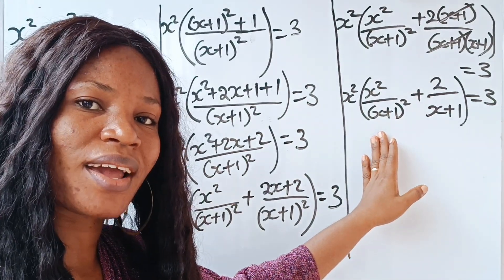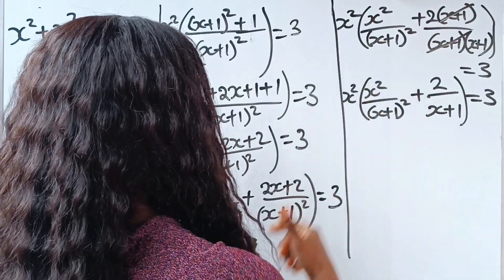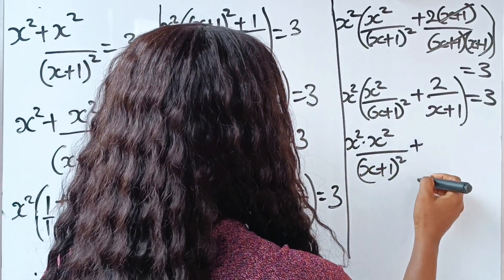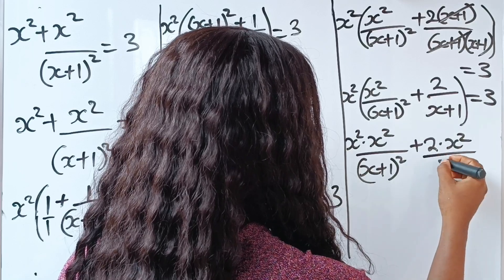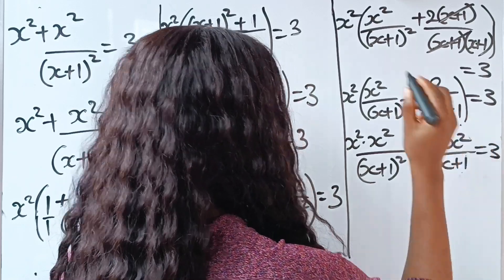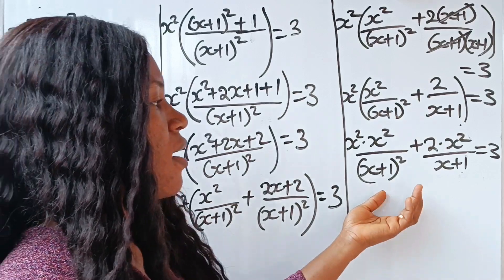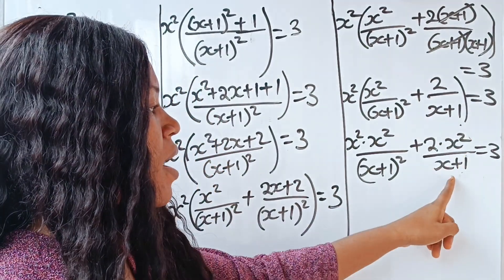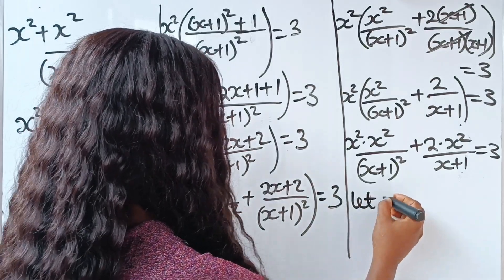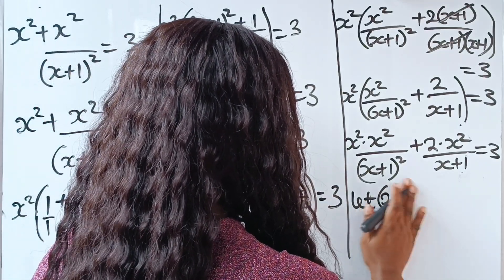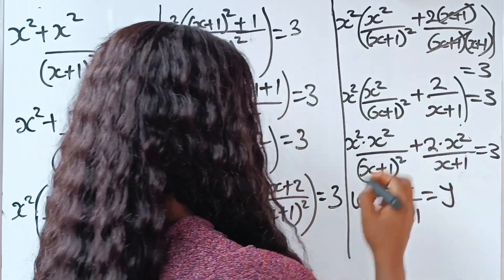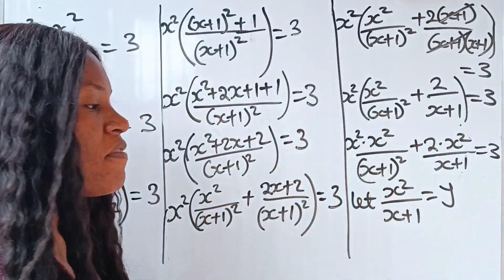Let's open these brackets. When x squared multiplies x squared we get x⁴ divided by (x+1) squared, plus this is going to be 2 multiplied by x squared divided by (x+1) — just x+1, no squared anymore. Everything equal to 3. Now let's look closely — we have x squared divided by (x+1) appearing here, and another x squared divided by (x+1) here. So let's simplify by letting x squared divided by (x+1) equal to y.